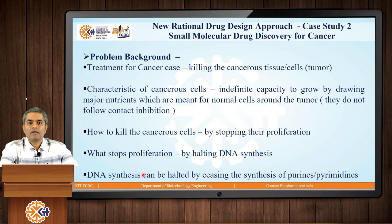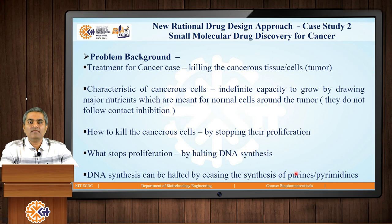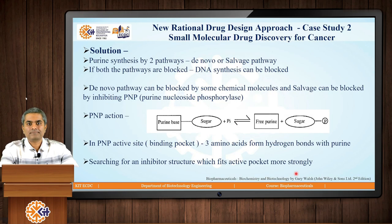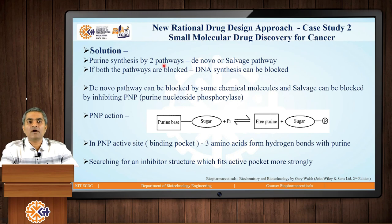To halt DNA synthesis, we can seize the synthesis of DNA precursors. DNA being a polymer, the synthesis of purines or pyrimidines can be stopped so that finally DNA synthesis will halt. Purine synthesis occurs by two pathways as per biochemistry: either by the de novo pathway or by the salvage pathway. The salvage pathway is an alternative — if de novo is not working, the cell will use the salvage pathway.